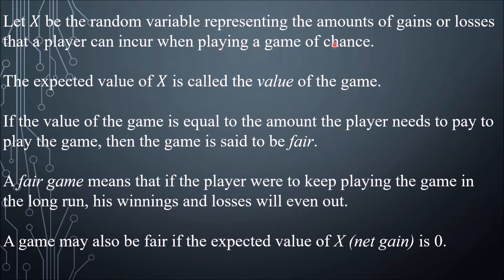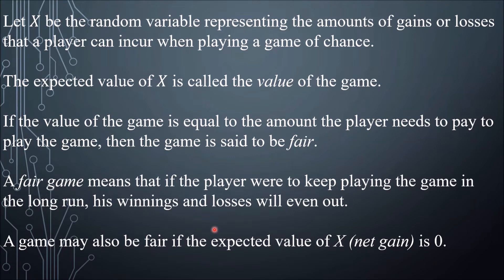Let X be the random variable representing the amount of gains or losses a player can incur when playing a game of chance. The expected value of X is called the value of the game. If the value of the game equals the amount the player needs to pay to play, then the game is said to be fair. For example, if you pay 100 pesos and the expected value is also 100, the game is fair. A fair game means that in the long run, winnings and losses even out — the net gain is 0. A game is also considered fair if the expected value of the player's net gain is 0.